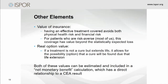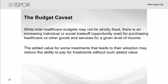Value of insurance and real option value are calculable, and there is work available through the Innovation Value Initiative that shows some numbers on this. One budget caveat: if you start adding in additional elements of value, they may increase the number of products that would qualify as being worth it, or allow for increased prices. Even if budgets are not strictly fixed, there's an increasing social trade-off because there's always an opportunity cost to providing healthcare. So you have to watch how you use these value elements in decision-making.